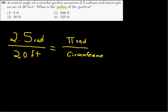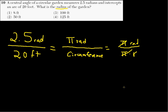We know that there are pi radians in a full circle, so pi radians over whatever the circumference is. We'll abbreviate that as C. So we have 2.5 radians over 20 feet equals pi radians over the full circumference. Circumference equals pi times the radius, so that becomes pi radians over pi times R. Immediately, the pi's cancel out and we want to solve for R.